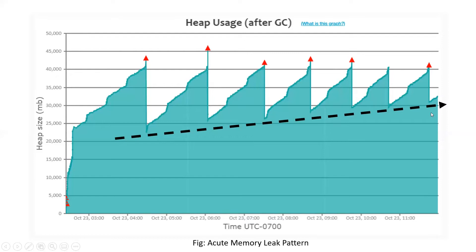This is indicative that the application is suffering from an acute memory leak — a minor memory leak. It's not very aggressive enough; if it were, it would have resulted in an out of memory error. But it's not very aggressive — slowly it is leaking. Eventually, just by looking at this pattern, we can say this application is going to keep running for quite some time and then run into memory problems, because objects are leaking gradually and slowly building up.